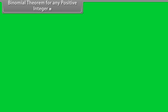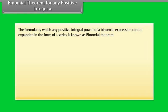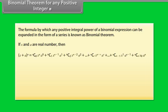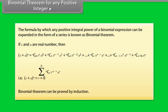Binomial theorem for any positive integer n: The formula by which any positive integral power of a binomial expression can be expanded in the form of a series is known as binomial theorem. If x and a are real numbers, then x plus a raised to power n is equal to the summation from r equals 0 to n of nCr into x raised to power n minus r into a raised to power r. Binomial theorem can be proved by induction.